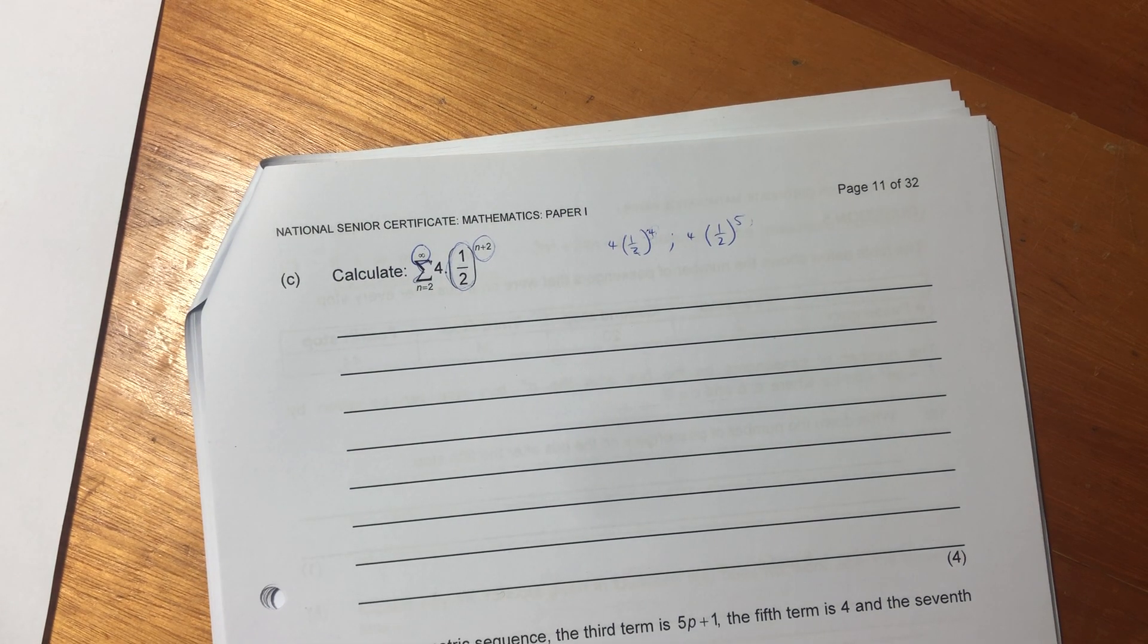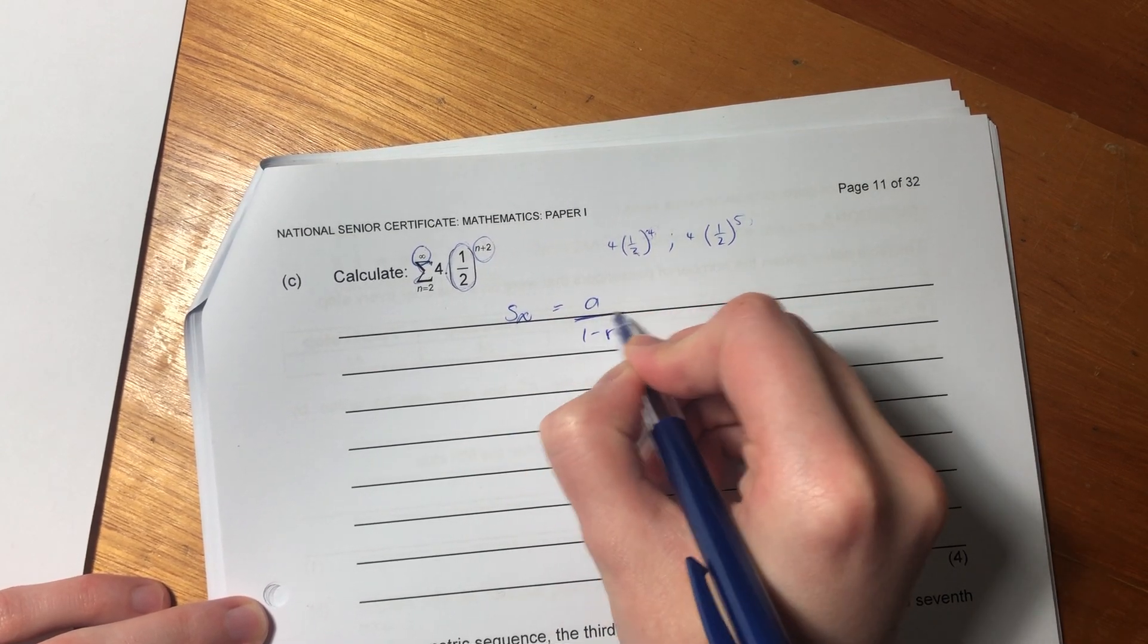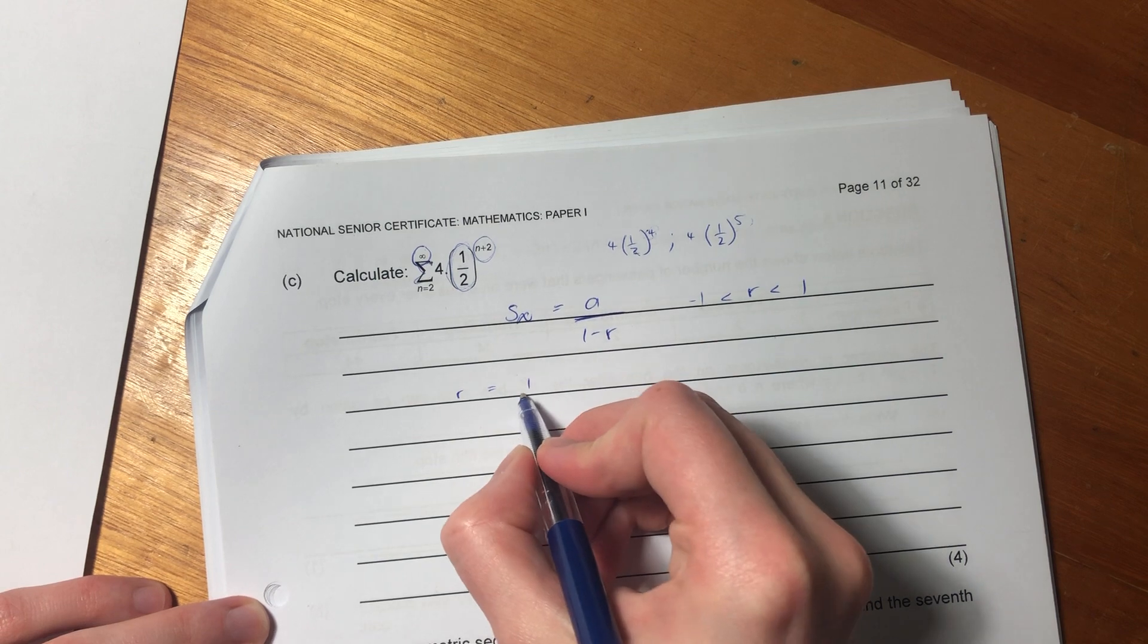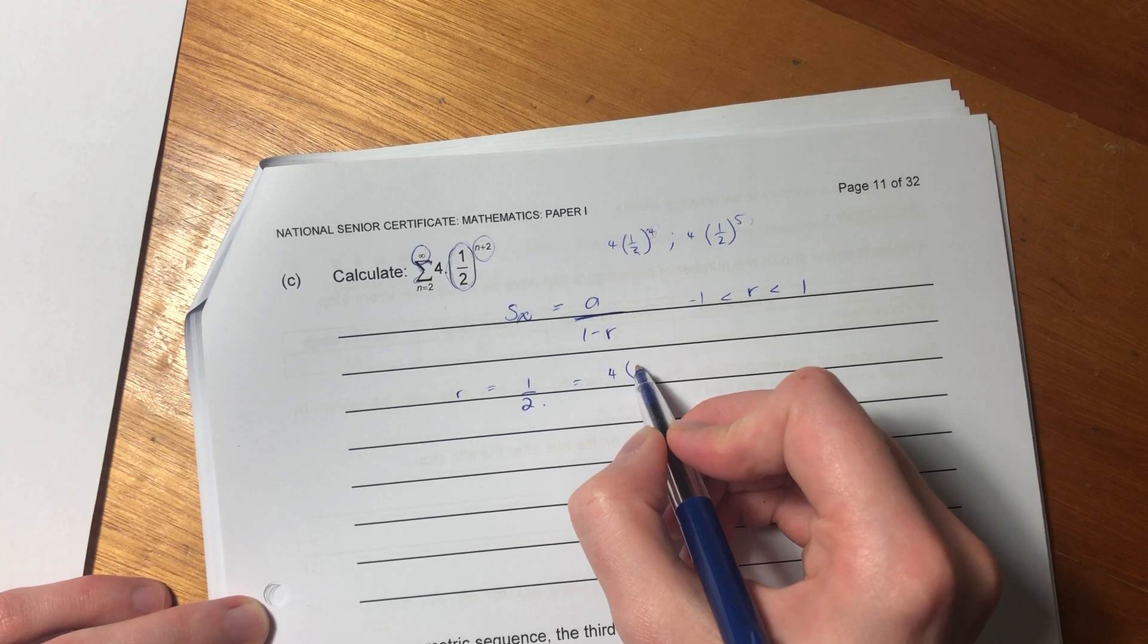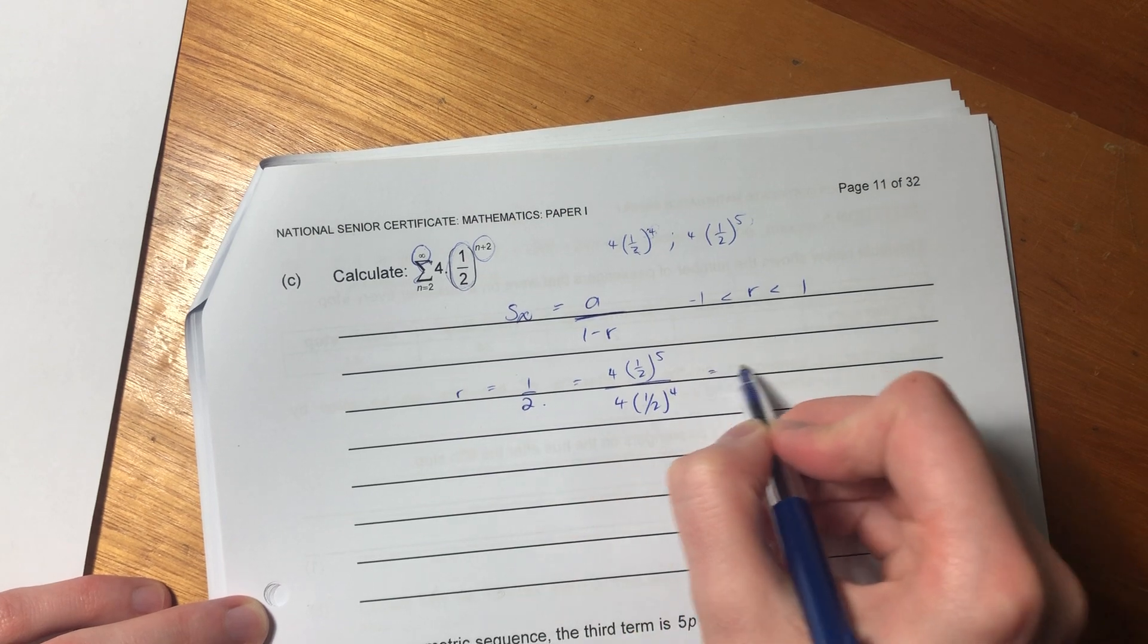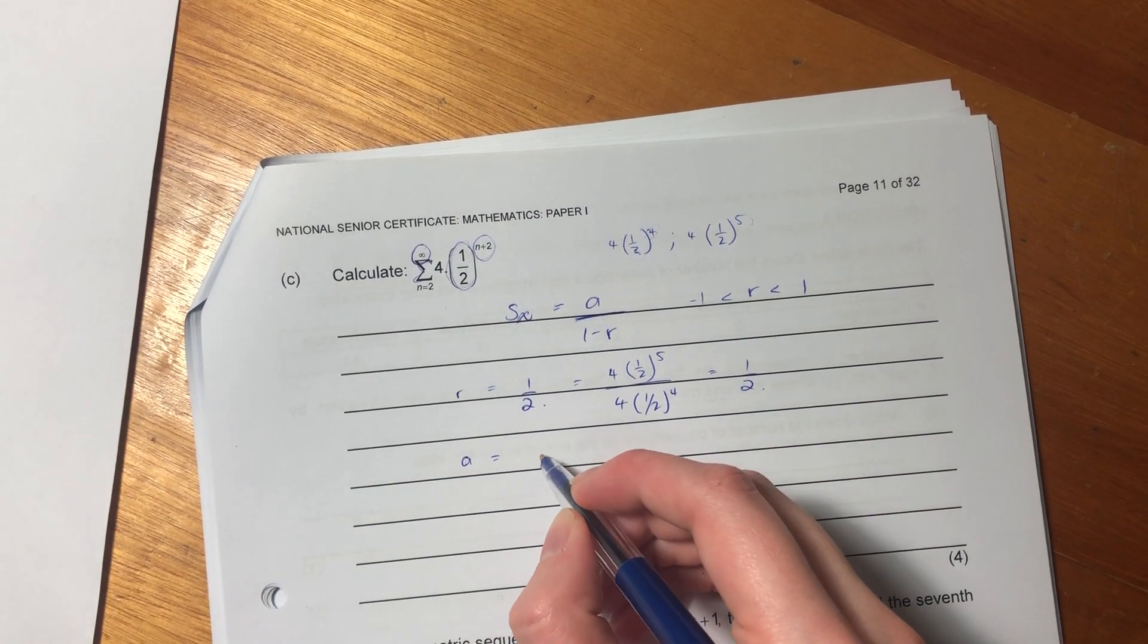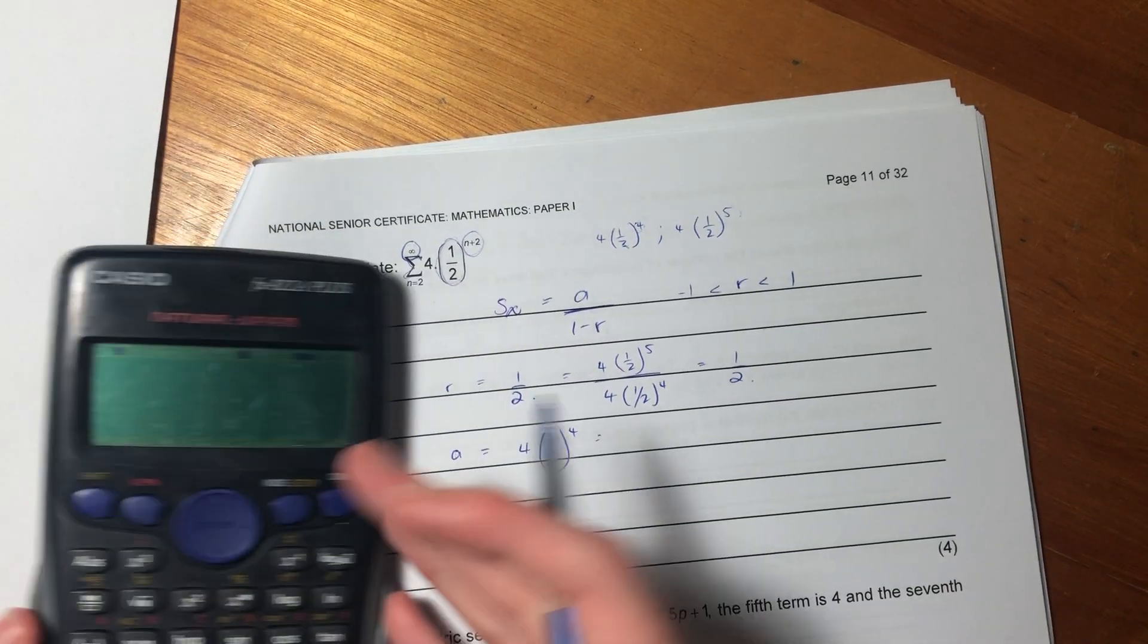So let's now look at this formula. So we know that we want to use this formula. We know that r has to be between 1 and negative 1. And in this case, we know that r is going to equal a half. If you don't believe me, you could always use the terms I've given you there. You could say, you know, the second term over the first term, and that actually equals a half. So that's what r equals. So a is just going to equal, it's going to be this 4, 1 over 2 to the power of 4, which we can just put into our calculator.